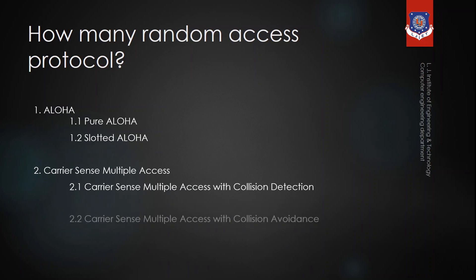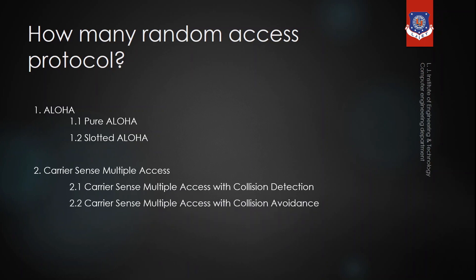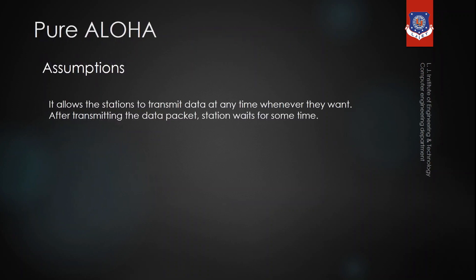Aloha is further divided into two types: pure Aloha and slotted Aloha. Carrier sense multiple access is also divided into two types: carrier sense multiple access with collision detection, and carrier sense multiple access with collision avoidance. Now let's discuss pure Aloha. In pure Aloha, the communication is totally dependent on acknowledgement.